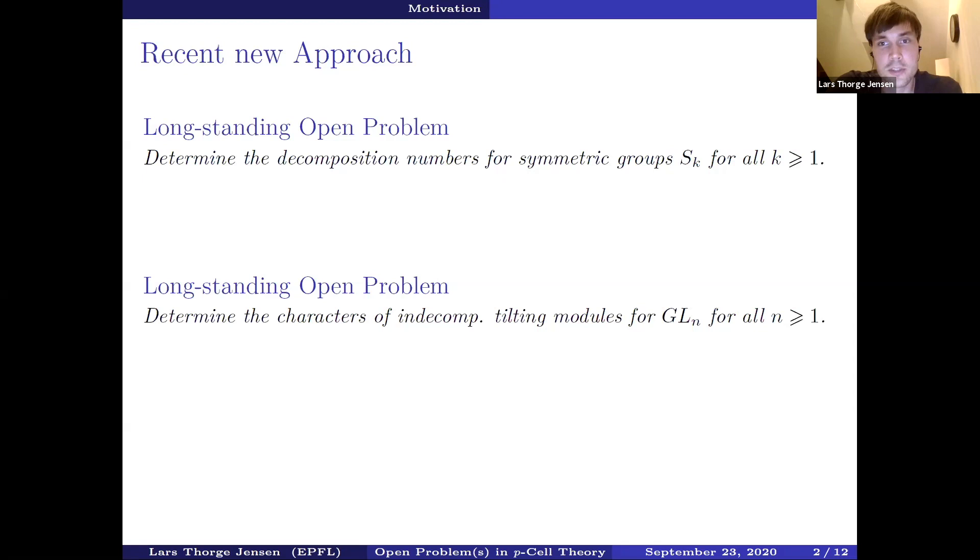Another open problem I want to mention is to determine the characters of the indecomposable tilting modules for GL_n for all n greater or equal than one. What is a tilting module? Just very briefly, this is a module that has a standard and a co-standard filtration. It turns out that the category of tilting modules is Krull-Schmidt. So you can look at these smallest building blocks, and these are the indecomposable tilting modules. Their characters has been a long standing open problem to determine them. These two problems might seem unrelated at first, but actually by work of Donkin and Erdmann, these two problems are equivalent.